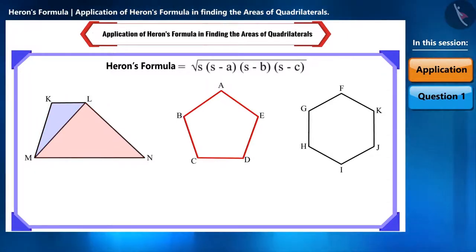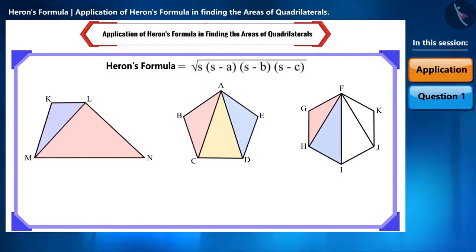Similarly, we can divide this pentagon into three triangles and this hexagon into four triangles. And if we know the length of the diagonal and the sides of all these figures, then using Heron's formula, we can easily find the area of all these figures.